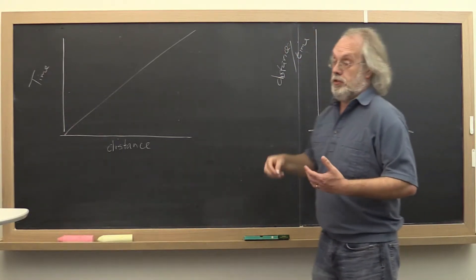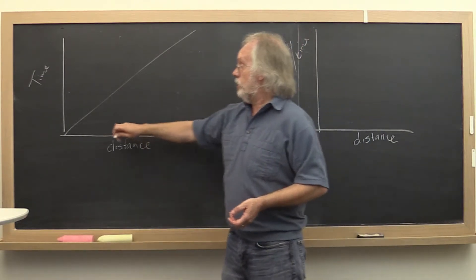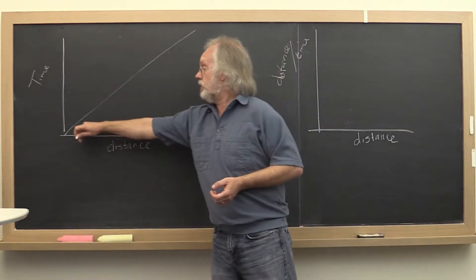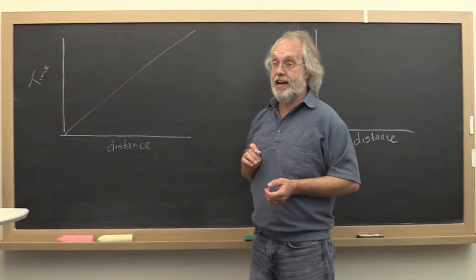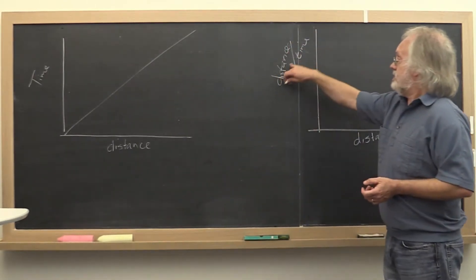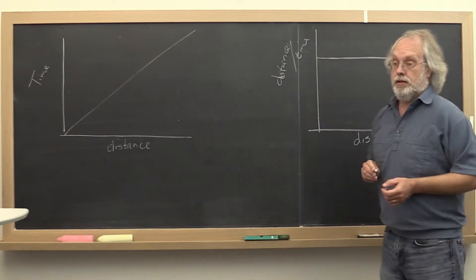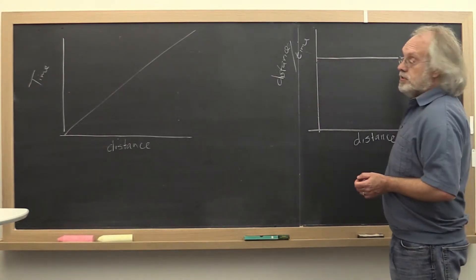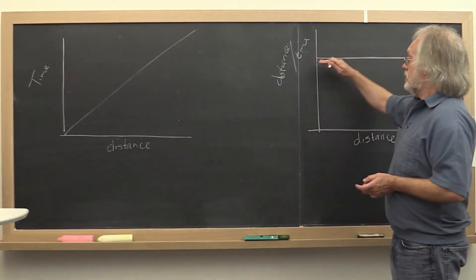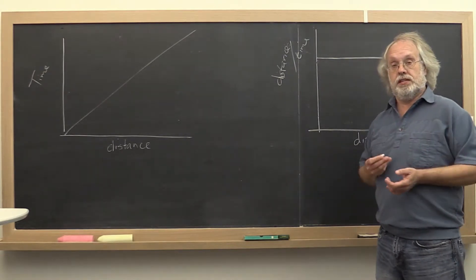And if you took calculus or even if you just took algebra, you would know that if this is a straight line then distance divided by time would turn out to be some kind of constant. And that constant would then somehow represent speed.